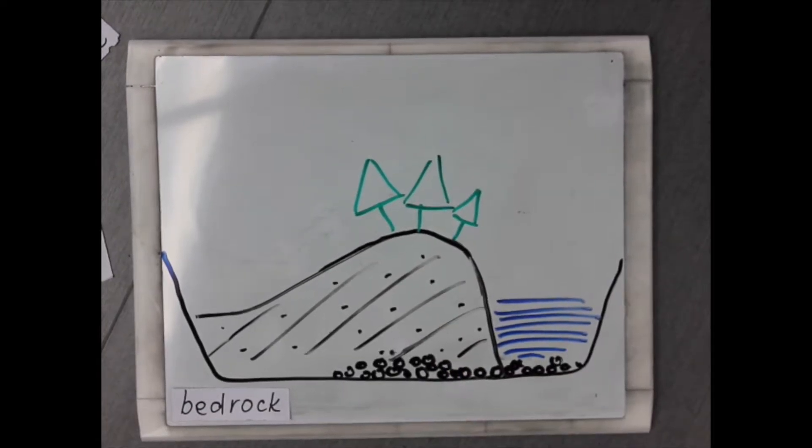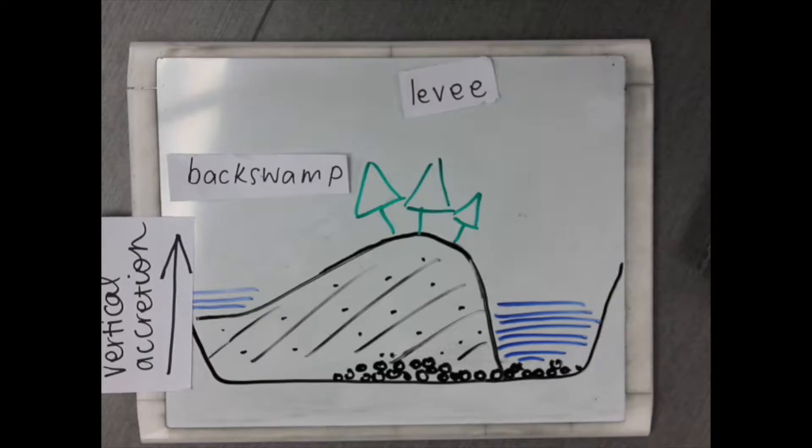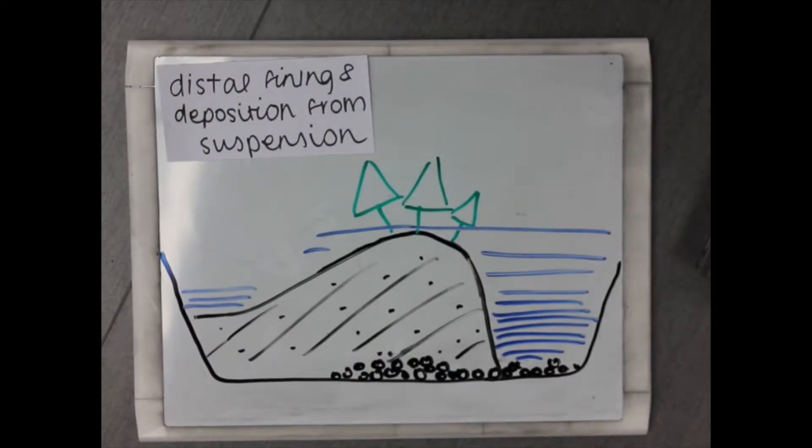For example, floodplains with a levee and back swamp rely heavily on overbank flow within the vertical accretion process. As this overland flow occurs, sediment is deposited onto the floodplain and distal fining happens.